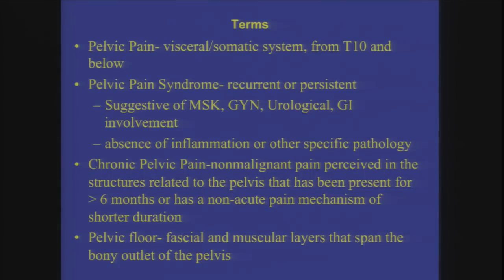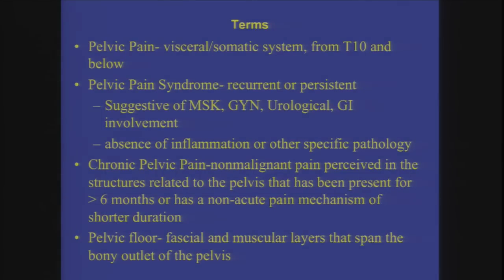Pelvic pain refers to anything related to the visceral or somatic nervous system structures from about your belly button level and below. With pelvic pain syndrome, there are many potential etiologies — it could be musculoskeletal, spinal or nerve related, gynecological, urological, or gastrointestinal. There's usually an absence of any other specific inflammation or pathology. Chronic pelvic pain is categorized by duration, usually having occurred for about six months or more. The pelvic floor anatomy is important so that the interventions we can offer make sense.